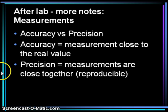Precision means that multiple measurements are all close together — that the device being used is giving reproducible results. For an individual who weighs 175 pounds, if we measure their weight many times and the scale reads 175, 174, 175, and 176, this scale is giving very precise measurements because it is always giving a result close to the real value. We would also say those measurements were all accurate.